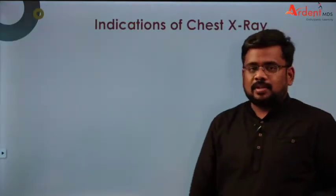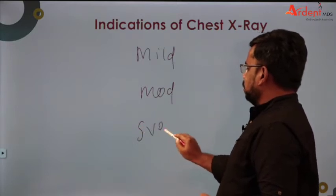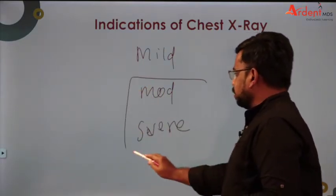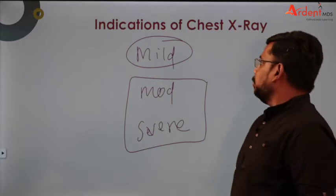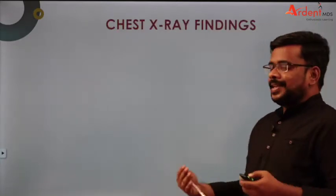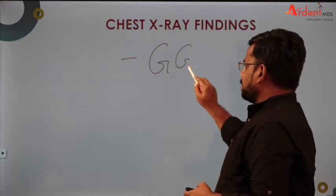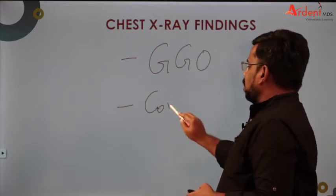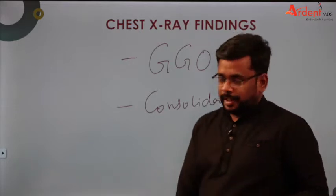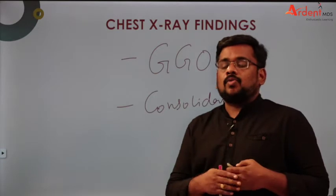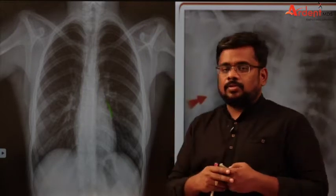Coming to chest X-ray findings, there are two important findings. Number one: ground glass opacities. Number two: consolidation. These are the two important chest X-ray findings associated with COVID-19. They may give you pictures in the exam and ask what the diagnosis is or what the feature is called. So we need to look at images of a COVID-19 patient.